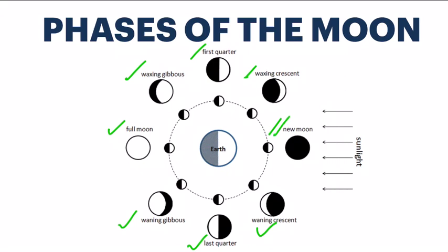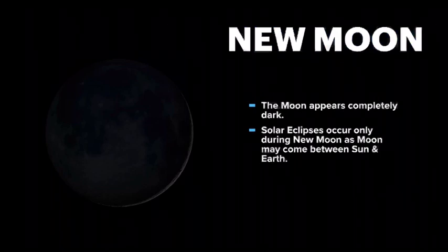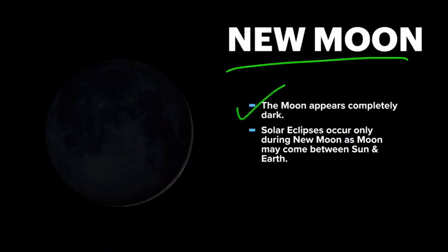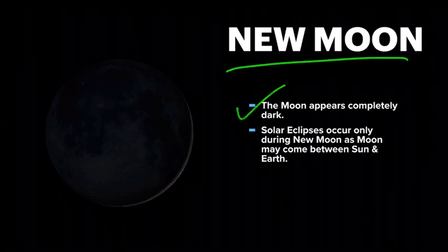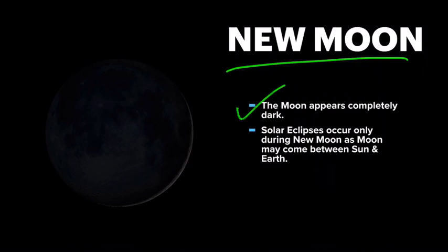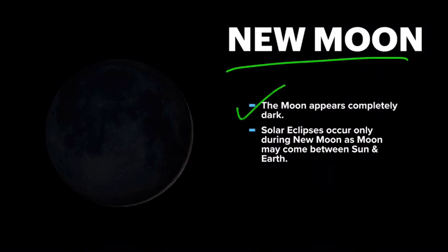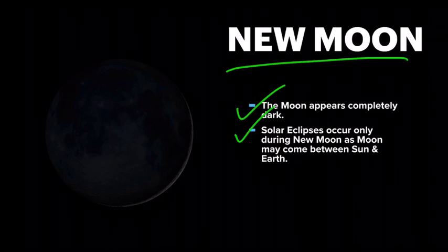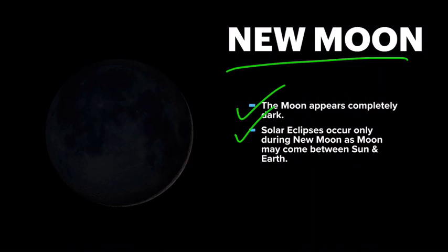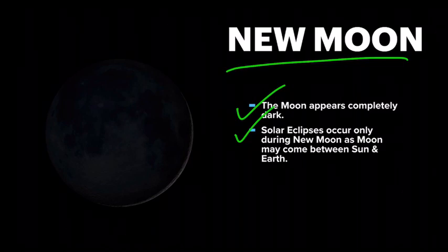Let me summarize each phase, starting with new moon. The moon appears completely dark because the night side of the moon is facing the earth directly. If you look at the diagram, during a new moon the moon is positioned between the earth and the sun. This is also the time when solar eclipses occur — solar eclipses can only happen during a new moon when the moon comes between the earth and the sun. In fact, yesterday there was a solar eclipse, so yesterday's moon was a new moon.